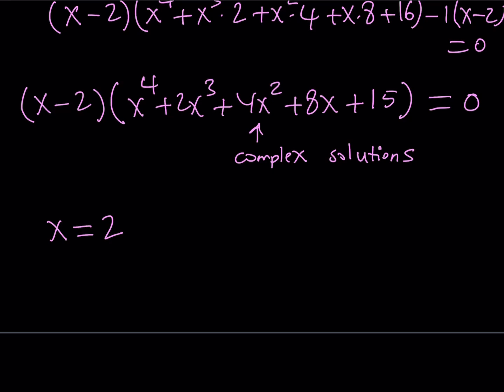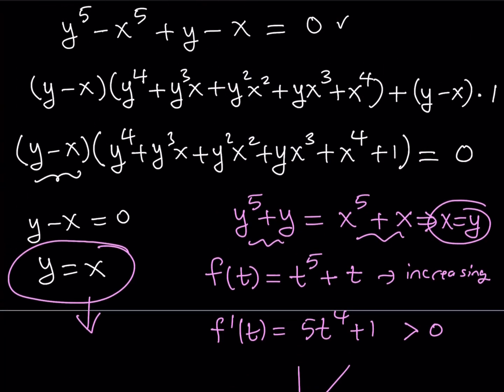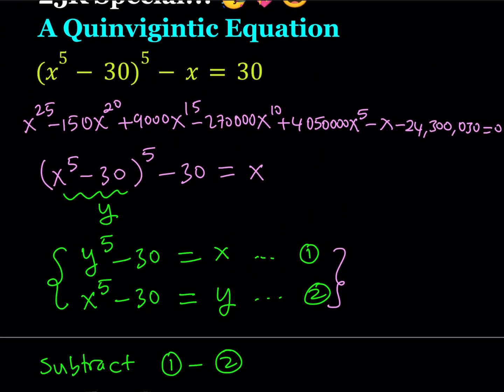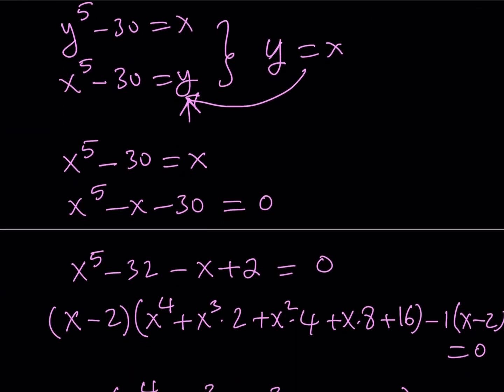If you substitute, replace x with 2, you're going to get 2^5, which is 32 minus 30, which is 2. 2^5 is 32 minus 2 is again 30. So it works. Great, awesome. We got a solution which is real and interestingly,